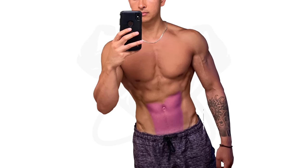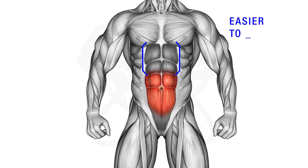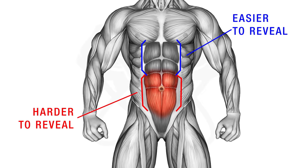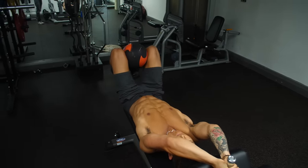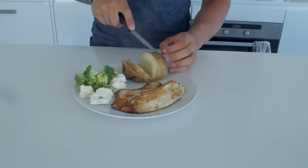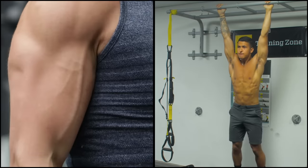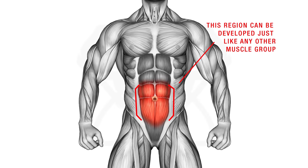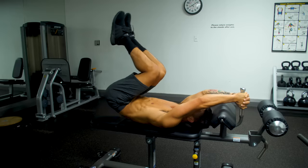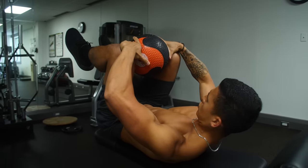The lower abs are one of the most important features that you'll want to develop if you're seeking to complete a well-defined six-pack and achieve an attractive-looking midsection. However, it's also typically the most difficult part of the abs to reveal, which is mostly due to the low level of body fat you'll need to achieve in order to do so, and is something that nutrition will be largely responsible for. But although nutrition will play a huge role in revealing your lower abs, just like any other muscle, you can actually prioritize and develop this region of the abs to make them more visible and pop, even at a higher body fat percentage. And the way you do this is by first choosing the right lower abs exercises and then performing and progressing them in the right manner.